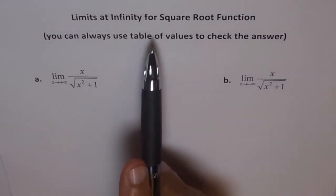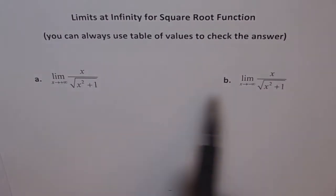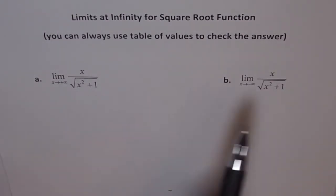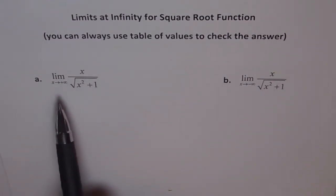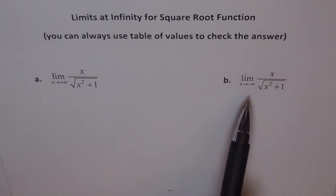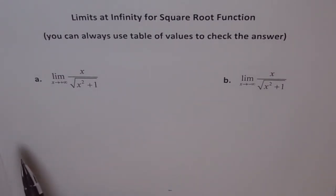Limits at infinity for square root function. Here we have two, in fact we have one only but the limit is approaching plus infinity here and minus infinity there. Now I hope you remember that when we are trying to explain how to find limit in our video number two, the first one was about limit, what is limit, second how to find limit.